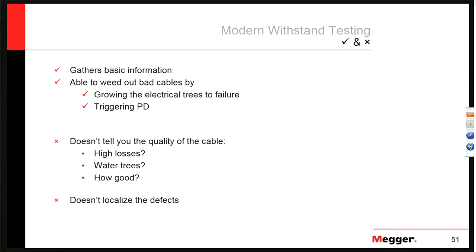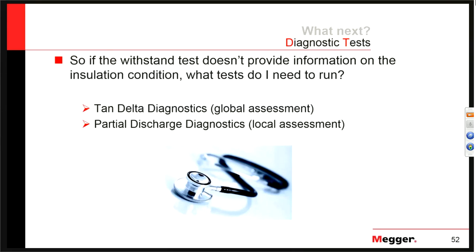In summary, basic VLF withstand testing gathers basic information about cables — it's able to weed out bad cables and weak spots by growing electrical trees to failure. What it cannot tell you is how well the cable is — whether it just barely passed or passed very easily — or if there are significant water trees or high losses. It also doesn't localize defects; the only way to find the weak spots is to cause the cable to fail and then use cable fault equipment. That's where diagnostic tests come in — ten-delta for global assessment of overall insulation condition, and partial discharge for local issues like splices and terminations.